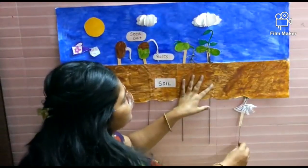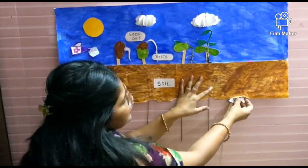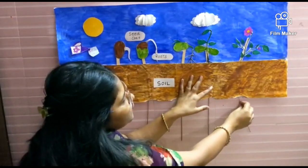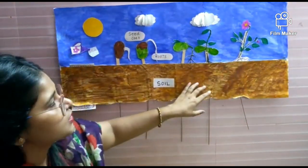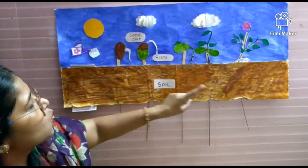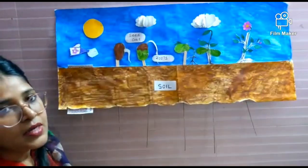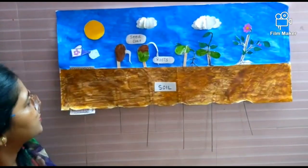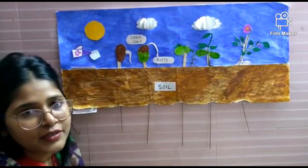After a few more days — like after a month — the flower will come out of it. So now you have seen what are the different conditions required by a seed to develop into a new plant. That's all for today.